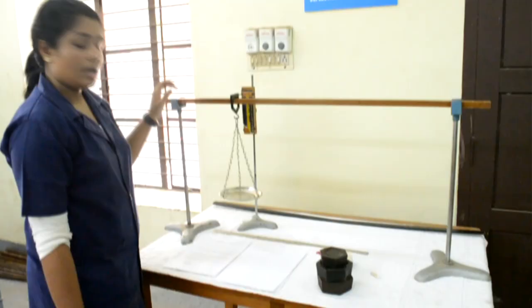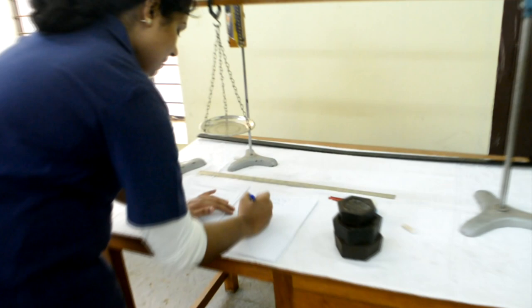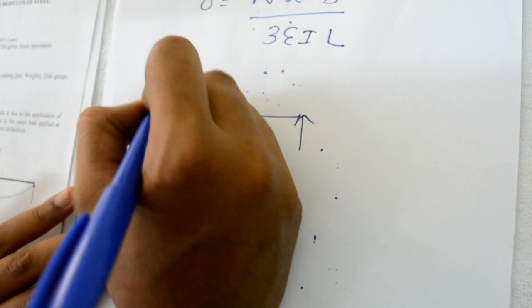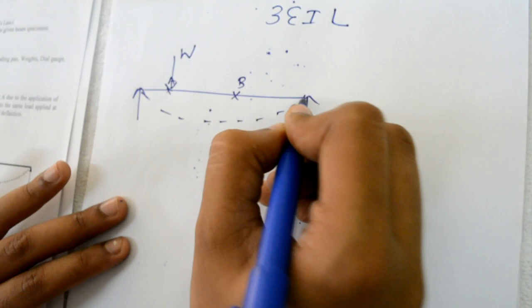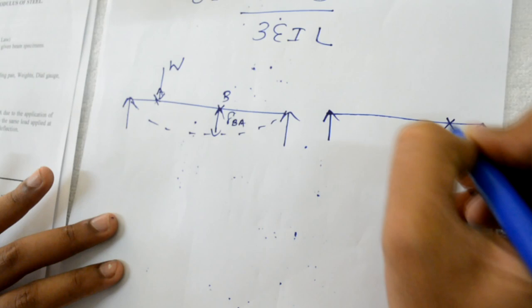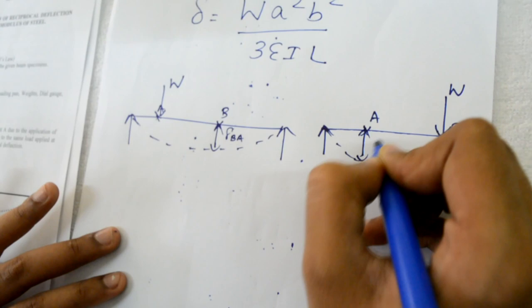And this span is A and this span is B. We can also verify Clapp Maxwell's law of reciprocal deflection. So the theorem states that when a load is applied at A and the deflection at B is measured, and when the load is applied at B and the deflection is measured at A, these two deflections must be equal.